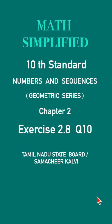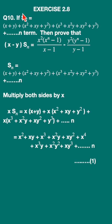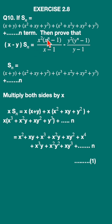Exercise 2.8, question 10. If S_n is equal to (x + y) + (x² + xy + y²) + (x³ + x²y + xy² + y³) up to n terms, then prove that (x - y)·S_n is equal to x²·(xⁿ⁻¹ - 1)/(x - 1) minus y²·(yⁿ⁻¹ - 1)/(y - 1).